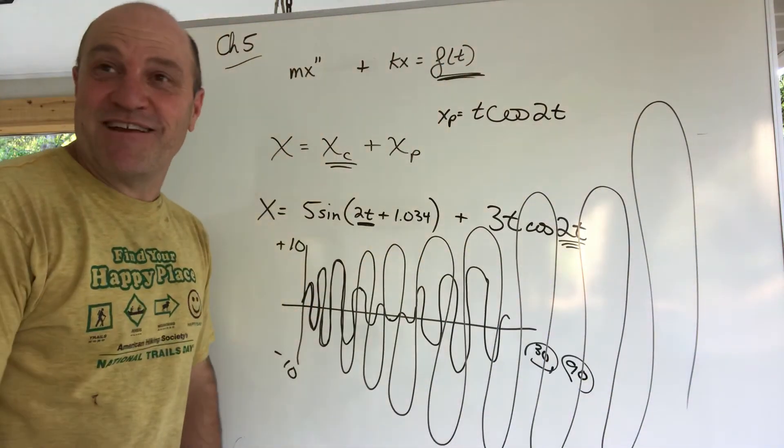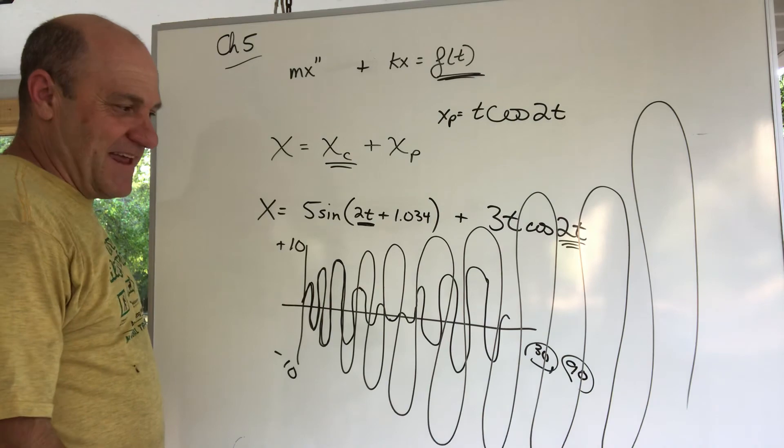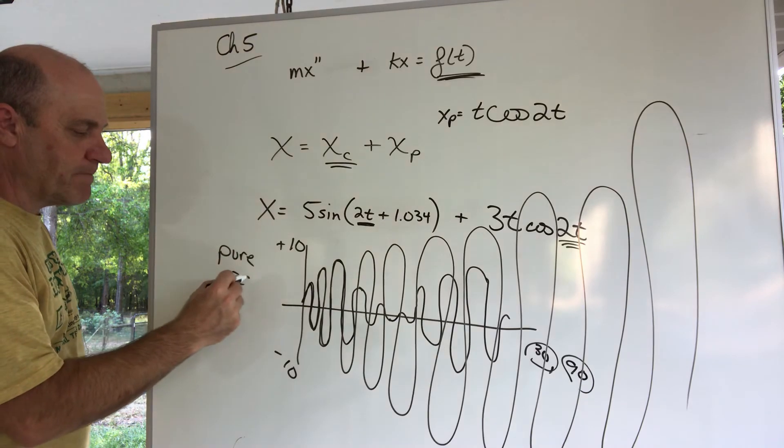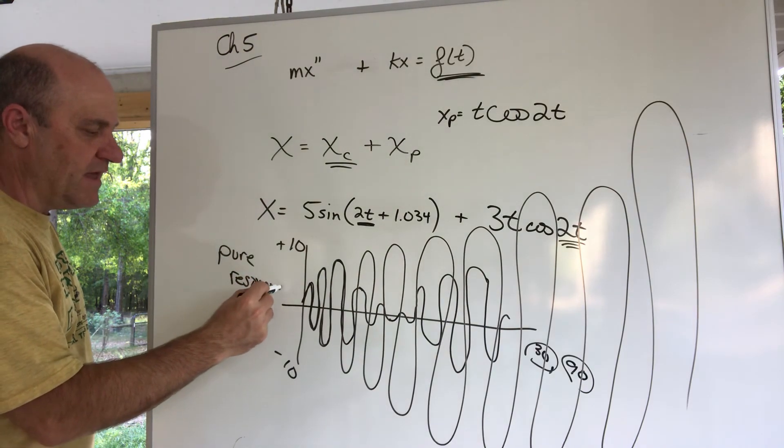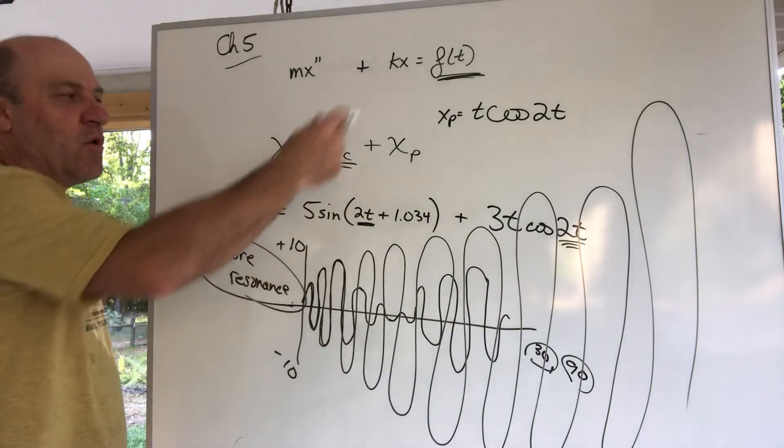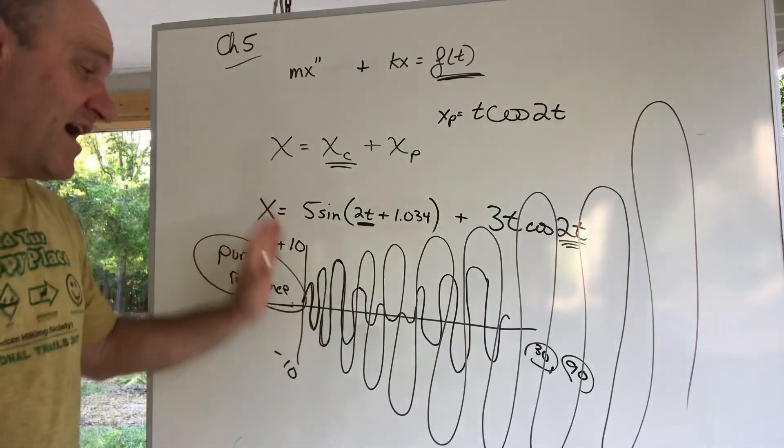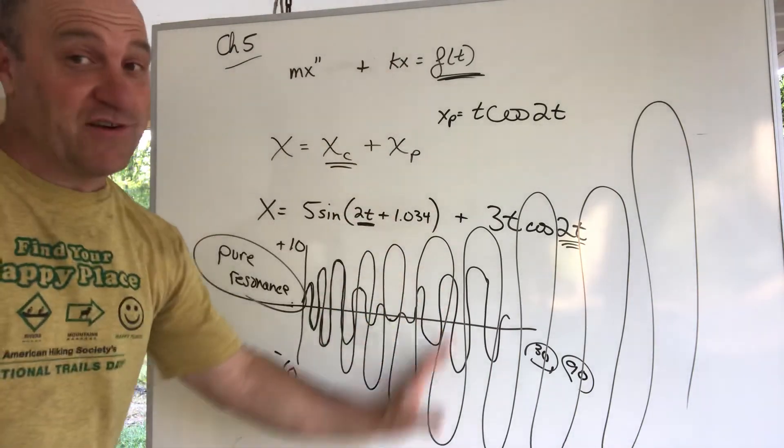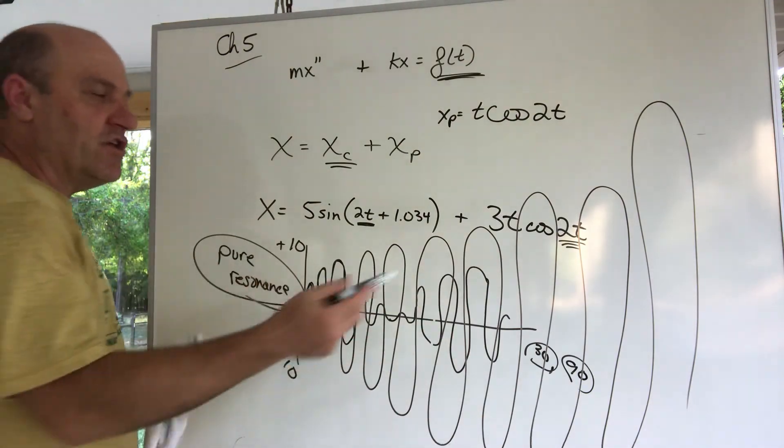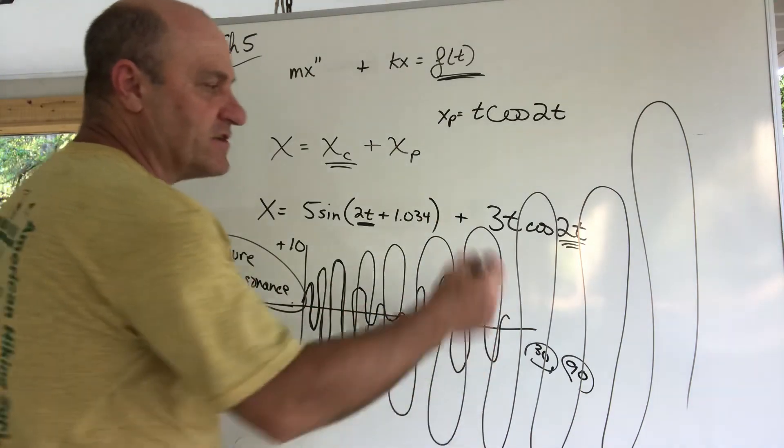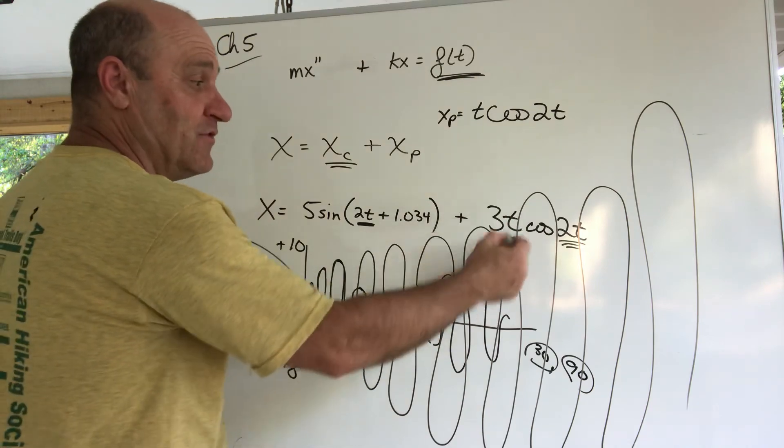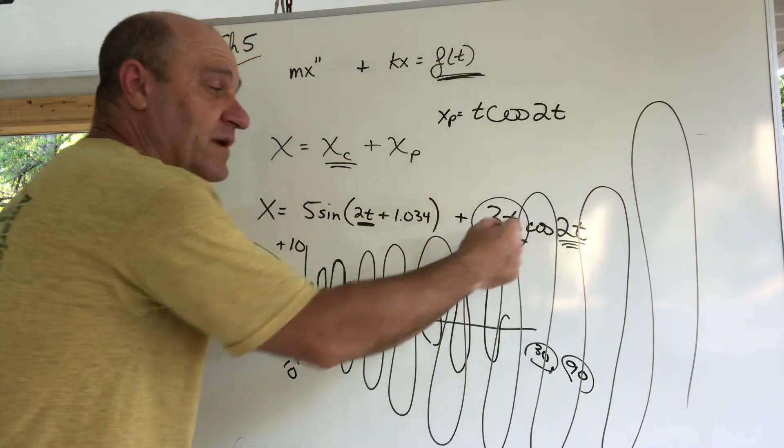At some point the spring breaks, the mass flies off. The word for that is pure resonance. Again it's a kind of an ideal situation because to get pure resonance you have to ignore damping, but there are plenty of places where you could have some terrible constructive interference that causes the spring to break, even if it's not pure resonance. You can think of it like this: what is the amplitude of this guy? The amplitude of this is growing as time grows. The amplitude grows, the amplitude grows to infinity, that's a good way to think of it.